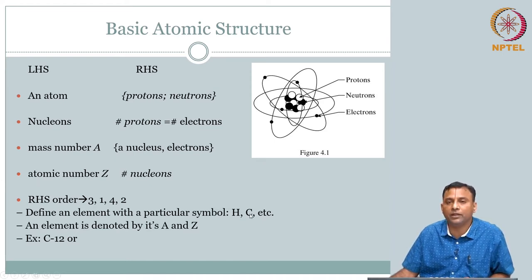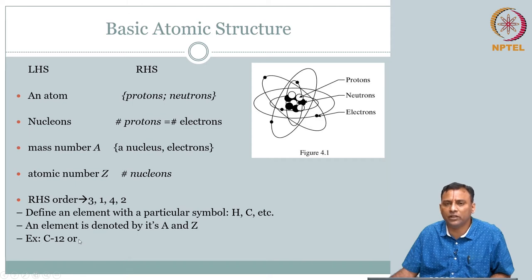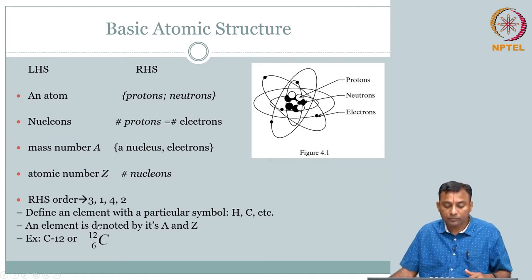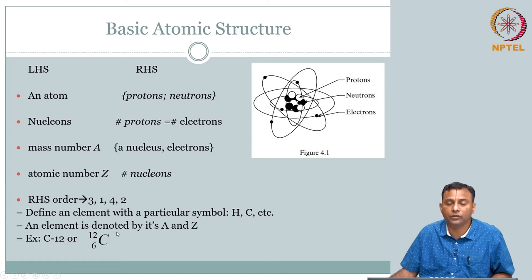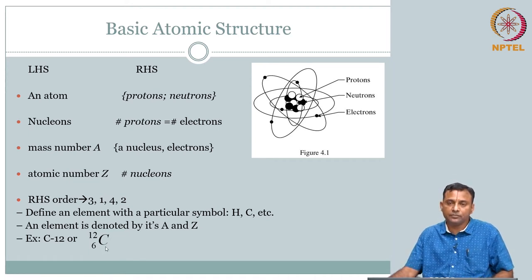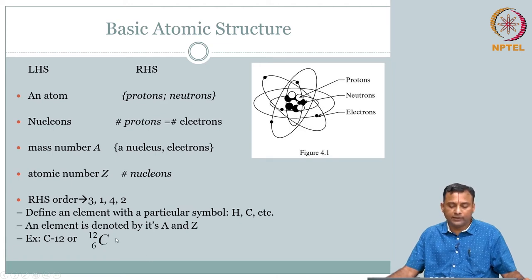To complete this: define an element with a particular symbol. You can represent an element like carbon-12 using its mass number and atomic number. If you say atomic number 6 that is good enough, but you can also call it carbon. There are several conventions. What is interesting is you can recognize the atomic number and mass number, and based on the relationship between them you can comment on whether it is a stable or unstable nucleus.